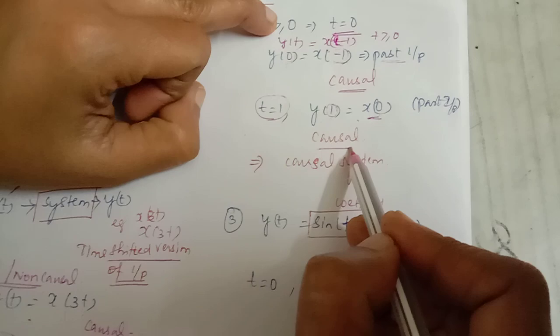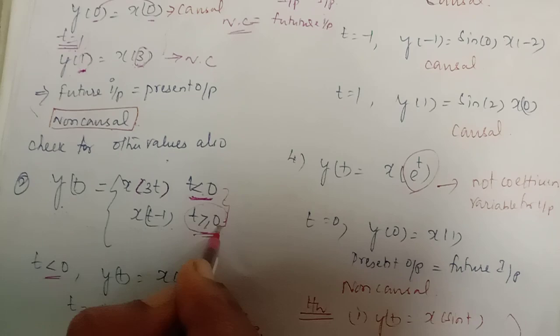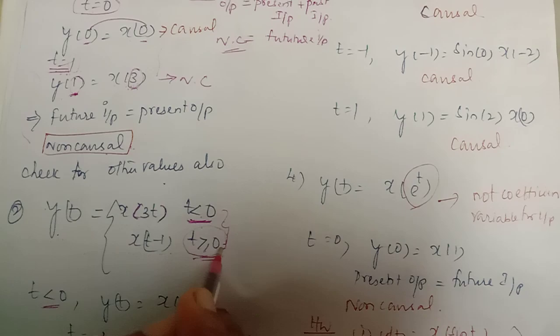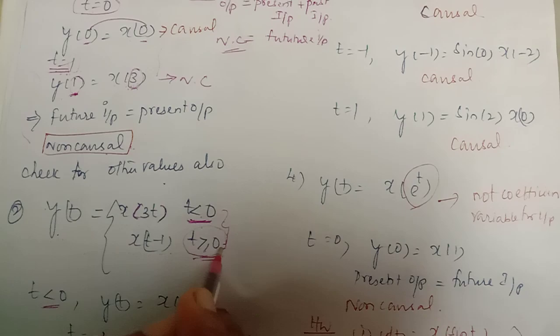We have verified all intervals: t < 0, t = 0, and t > 0. In each case, example values of t confirm the output depends only on past or present input values. Therefore, the system is found to be causal. We will now move on to the third problem.